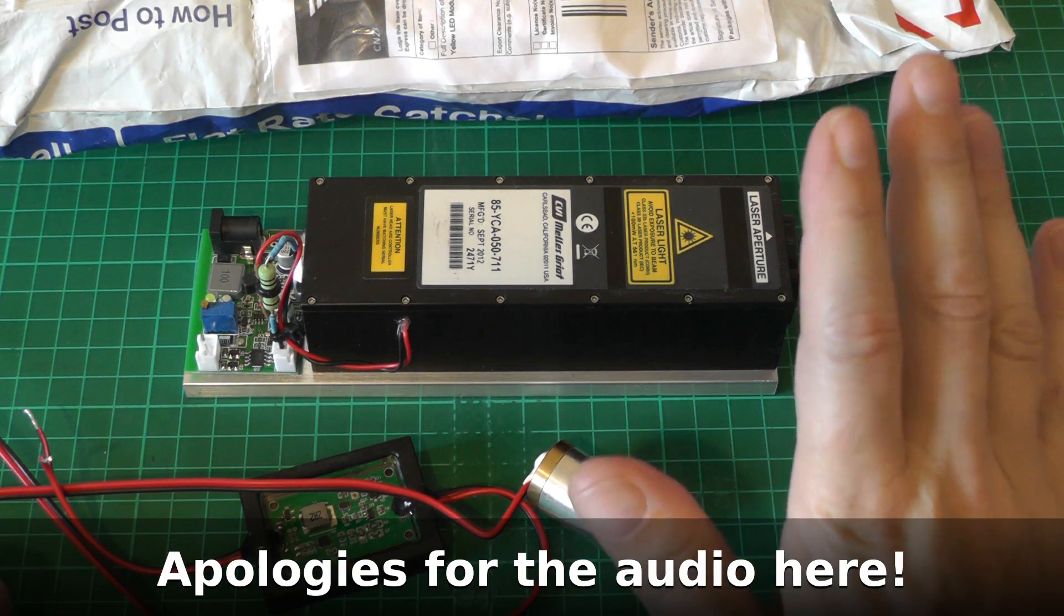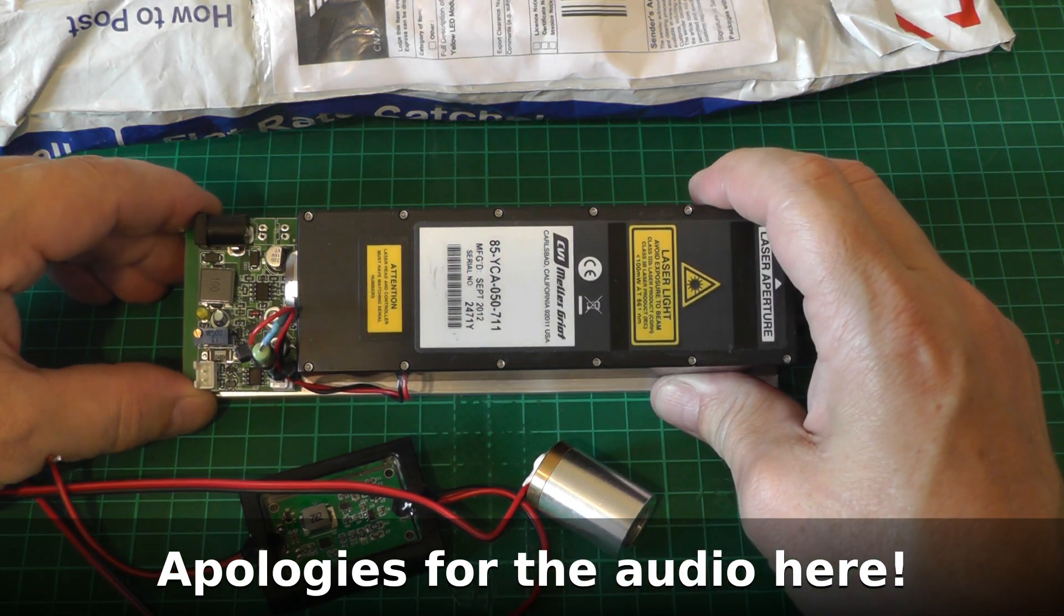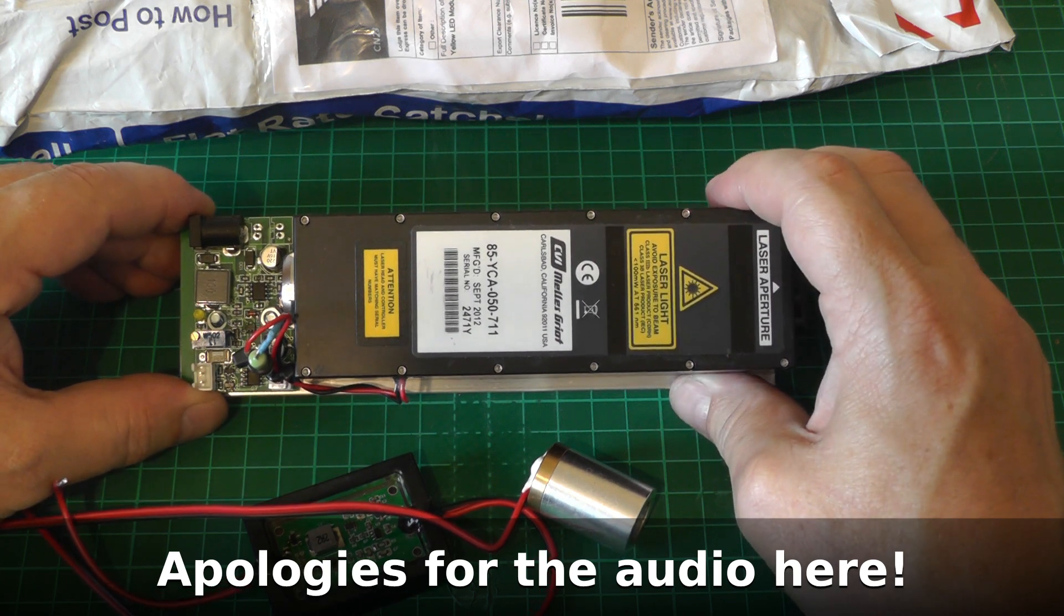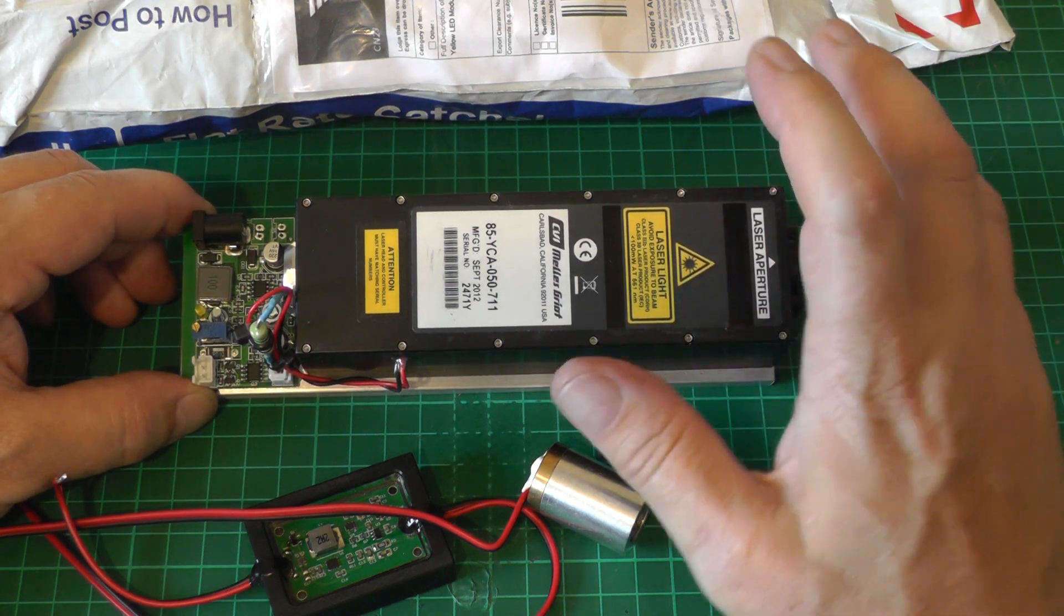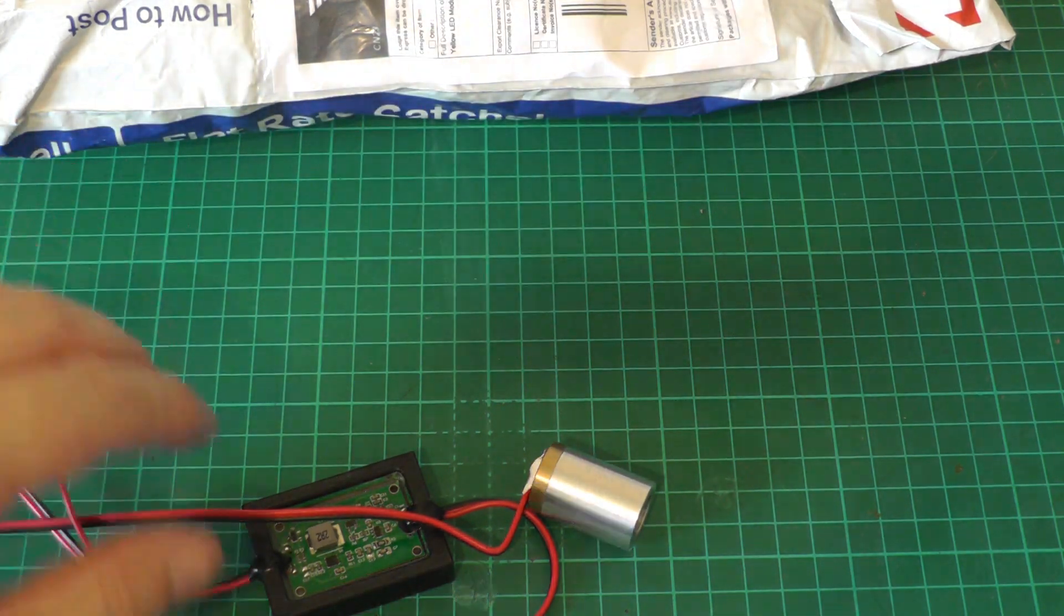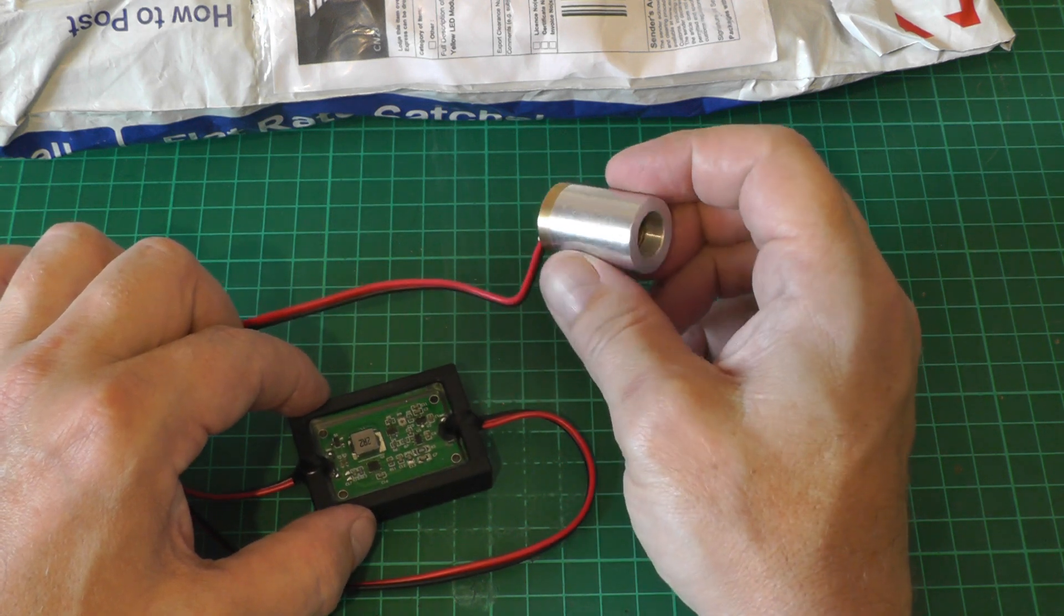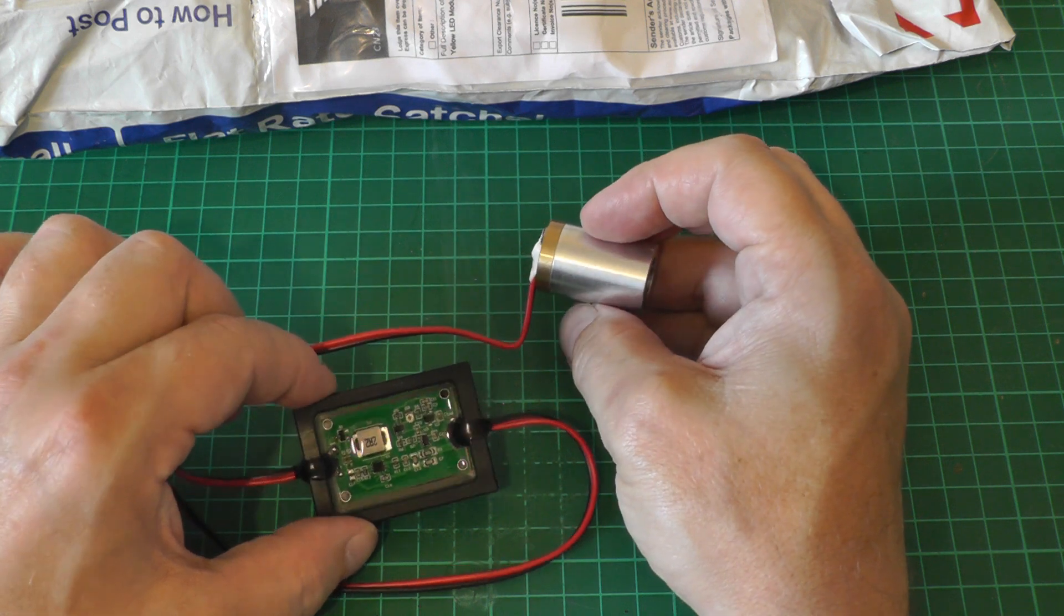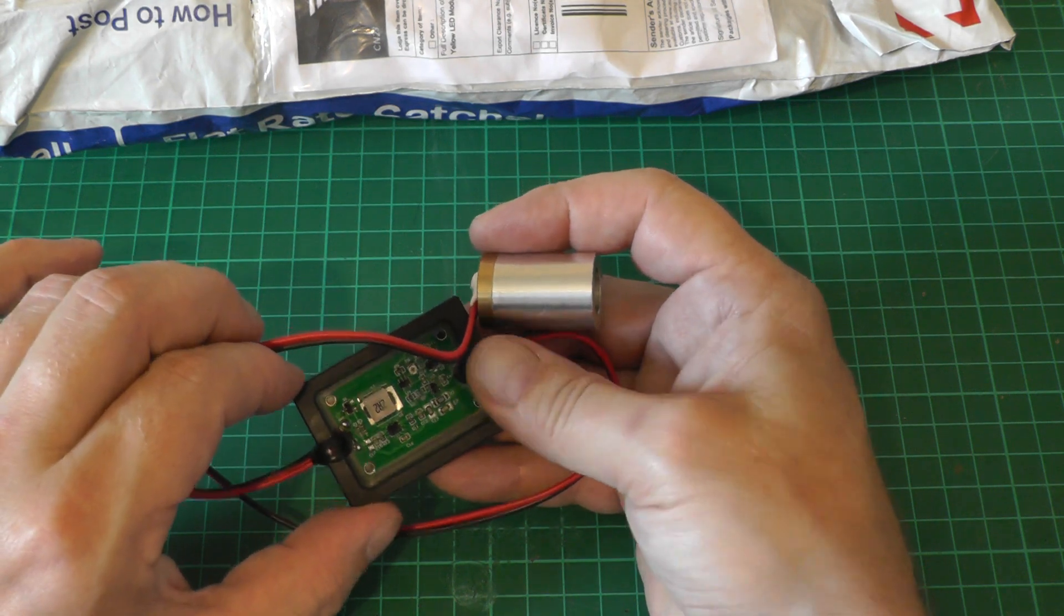In a previous episode we took a look at yellow DPSS lasers. This was one I picked up off eBay secondhand, a Melles Griot 561 nanometer yellow DPSS laser. Pretty nice but rare and hard to get hold of - brand new they're thousands of dollars. Then I picked up this off Alibaba for about $100, a 574 nanometer yellow DPSS laser module. Really nice, really good deal for the money.